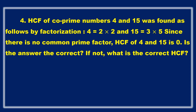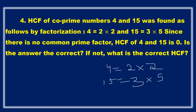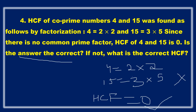Here is the fourth question. The HCF of co-prime numbers 4 and 15 was found by factorization: 4 = 2 × 2 and 15 = 3 × 5. Since there is no common prime factor, the student wrote that the HCF of 4 and 15 is 0. Is this answer correct? If not, what is the correct HCF?